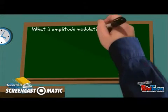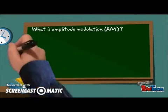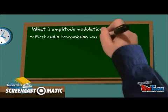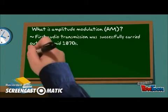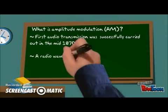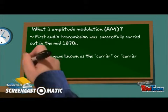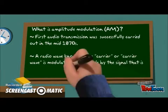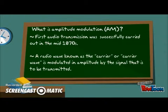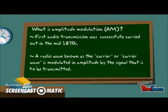AM stands for Amplitude Modulation. The AM method of audio transmission was first successfully carried out in the mid-1870s. In AM, a radio wave known as the carrier or carrier wave is modulated in amplitude by the signal that is to be transmitted. The frequency and phase remain the same.